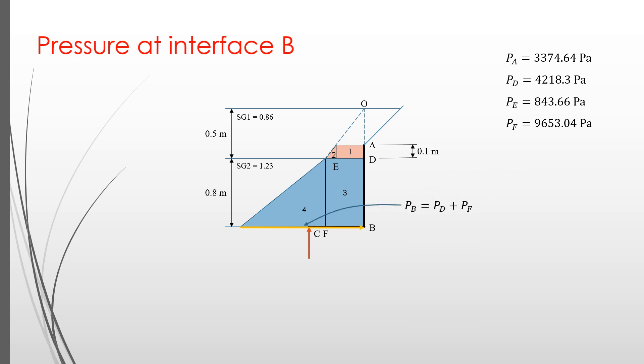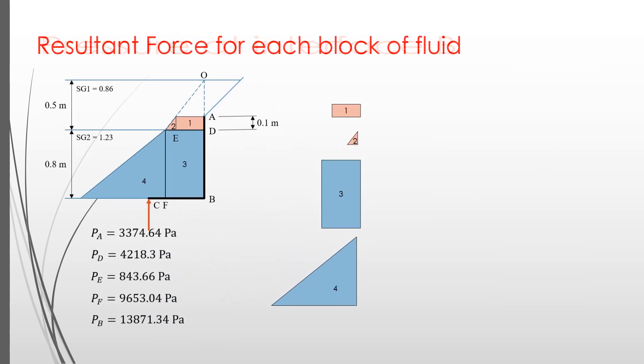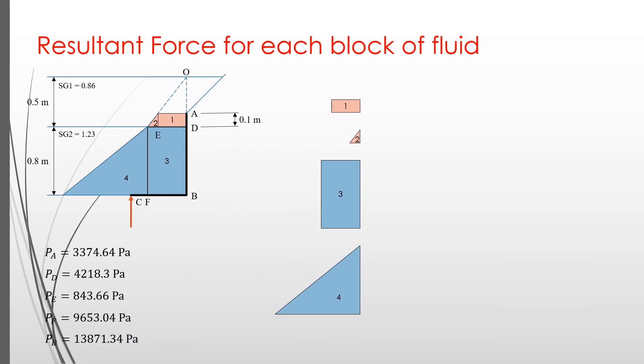The sum of PD and PF represents the pressure at B. PB equals 13871.34 Pascal. Now let's break down all the shapes, so that we can see them clearly.